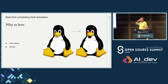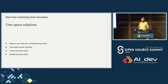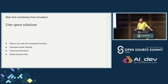Moving from why to how: we have our lovely good Tux and our very evil Tux — you can tell he's evil because he's got red eyes and a goatee, and he probably wants to install Windows on your laptop. We'll do a very quick run through some user space solutions. These are mostly going to be about how do we inject errors.